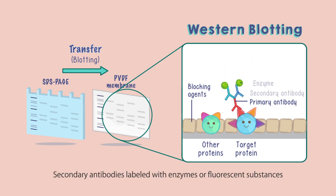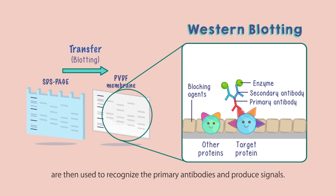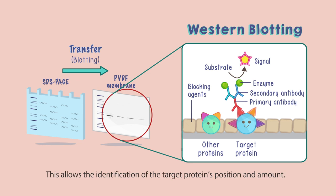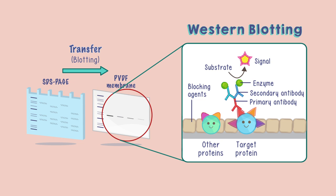Secondary antibodies labeled with enzymes or fluorescent substances are then used to recognize the primary antibodies and produce signals. This allows the identification of the target protein's position and amount.